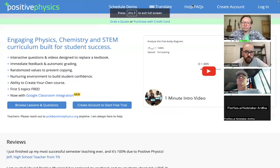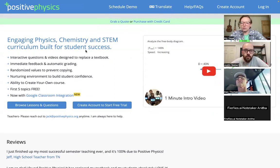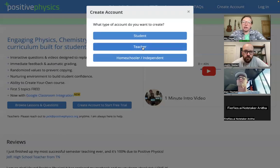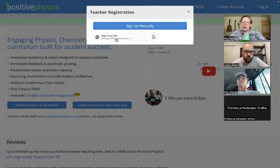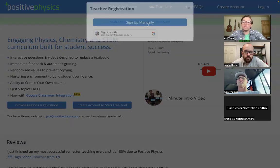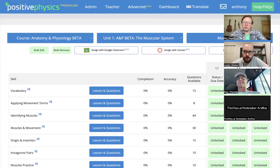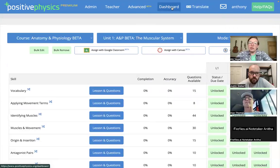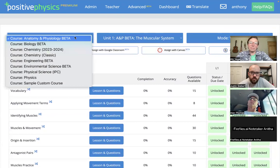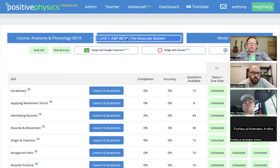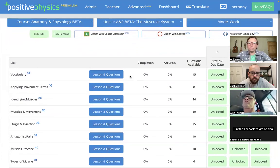Okay, so the website was originally made for physics, so positive physics, but it's now positive chemistry, positive STEM. Any of those websites take you to the same place. And once you get to this website, you'll click create an account, you'll click teacher, and then you can either try signing in with Google. That's a new thing we're just testing out at the moment, or you can sign up manually.